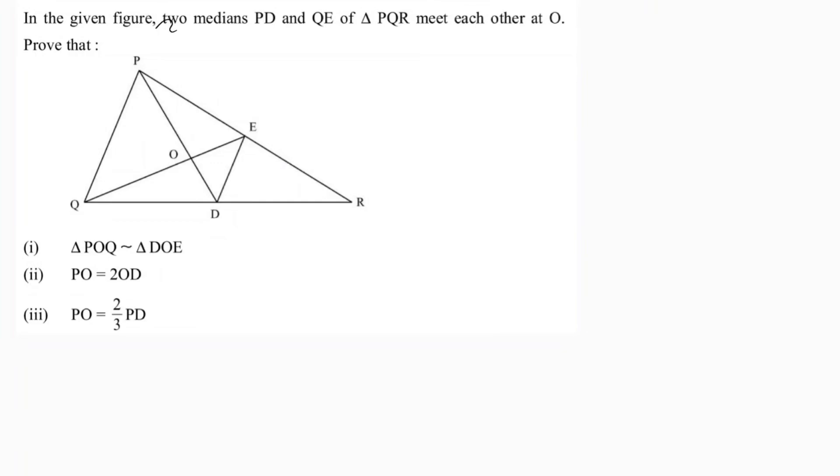In the given figure, two medians PD and QE meet each other at O. PD is a median, so D is the midpoint of QR. QE is a median, so E is the midpoint of PR. Prove that triangle POQ is similar to triangle DOE.